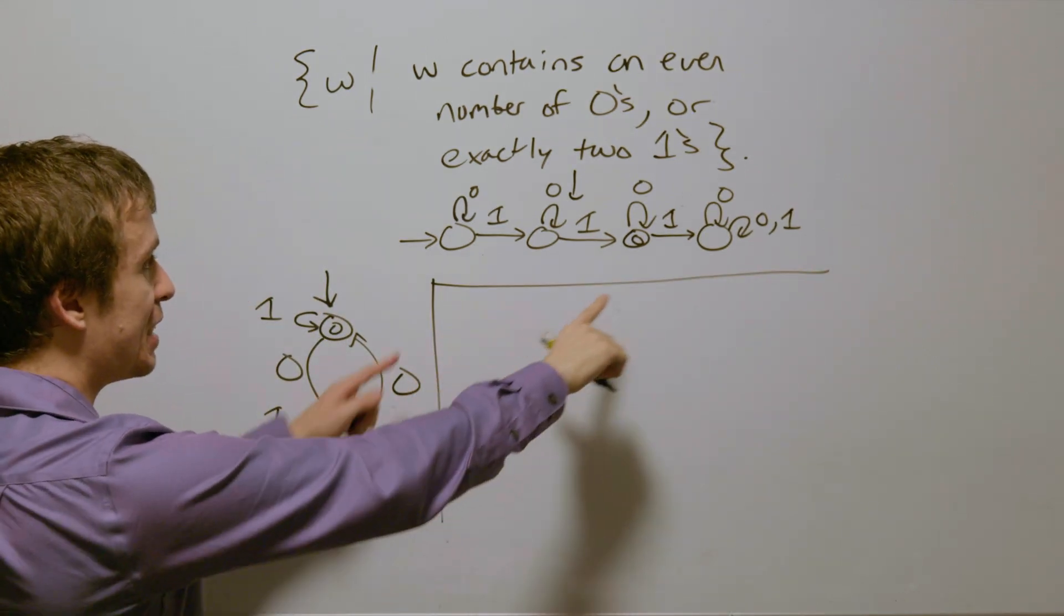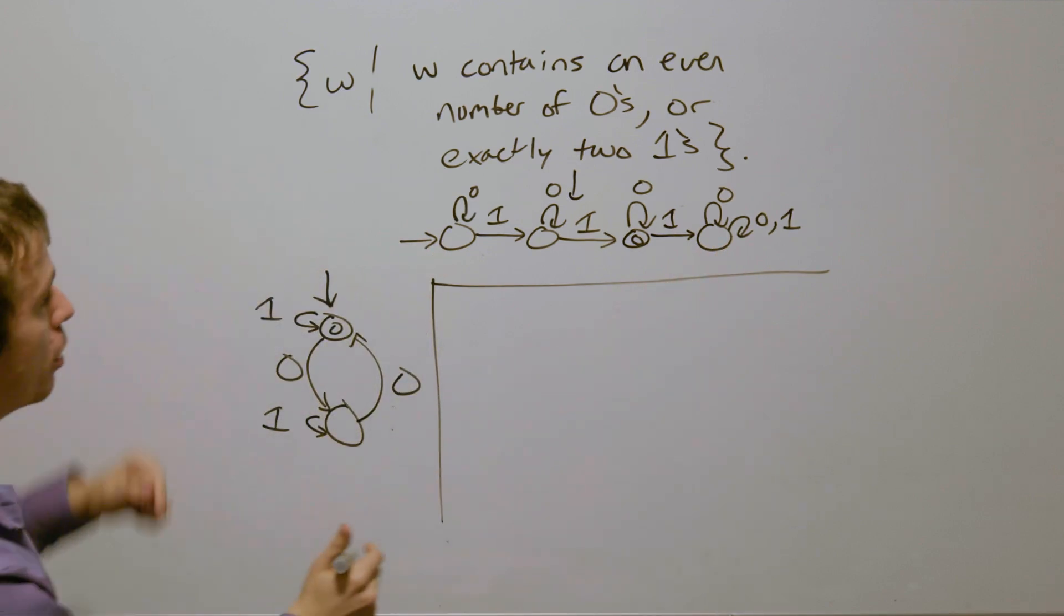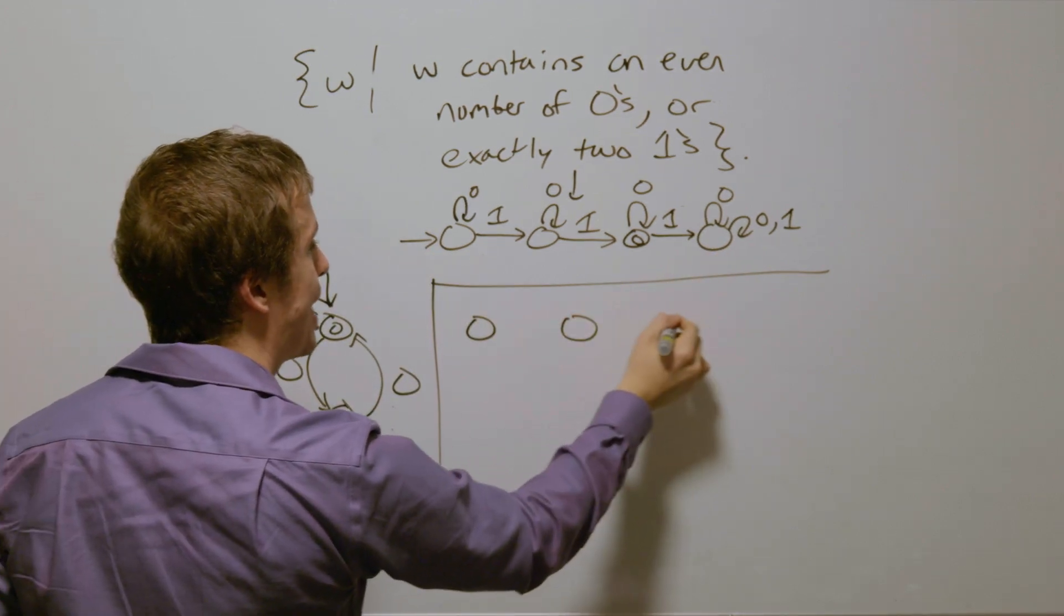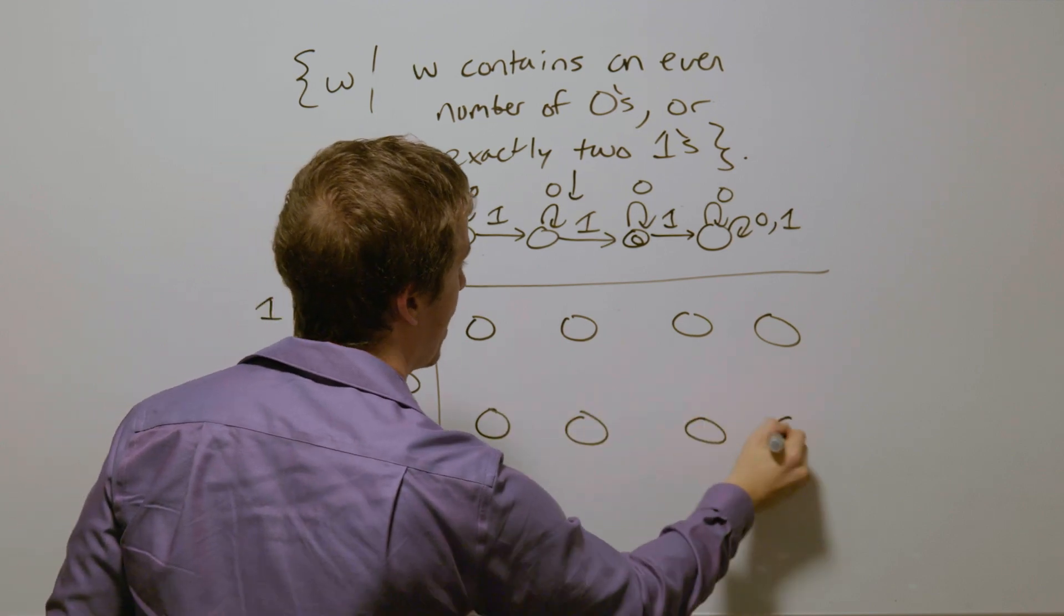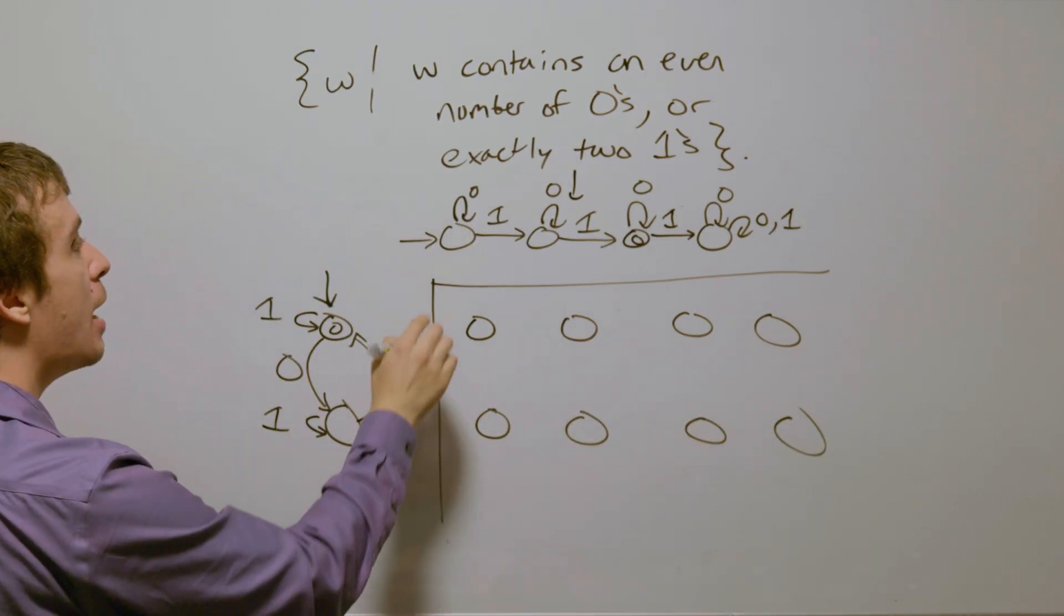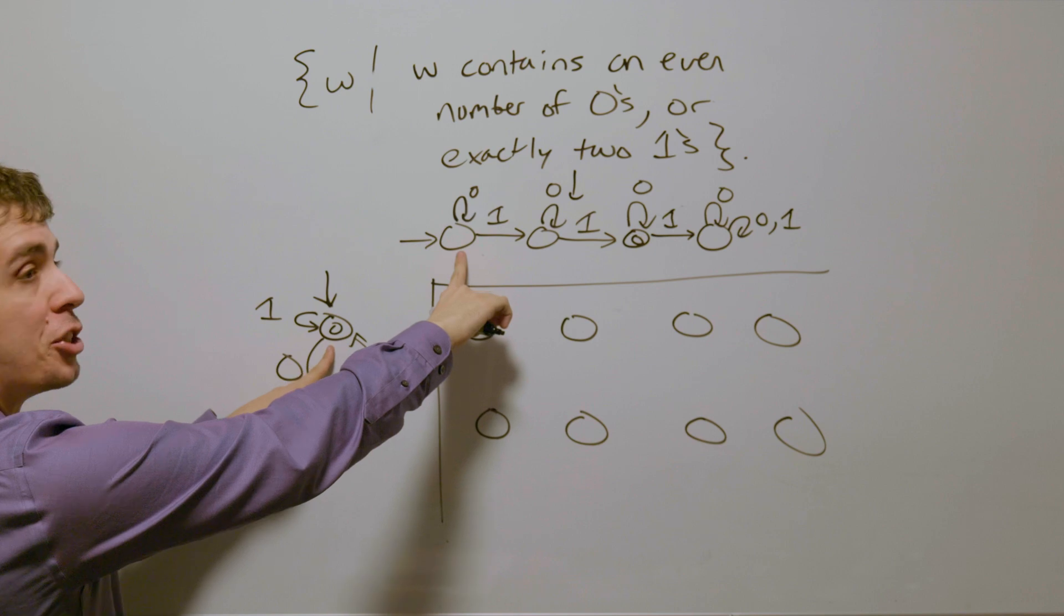Now let's use the product construction, where I'm going to make eight states, four times two, and so I'm going to have eight states right here, five, six, seven, eight, who do we appreciate, and the start state's going to be the start of both, which is this guy right here,